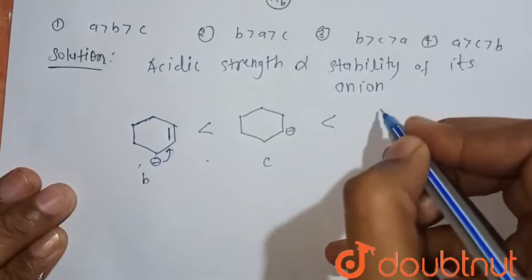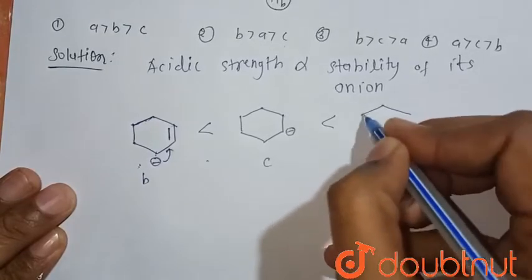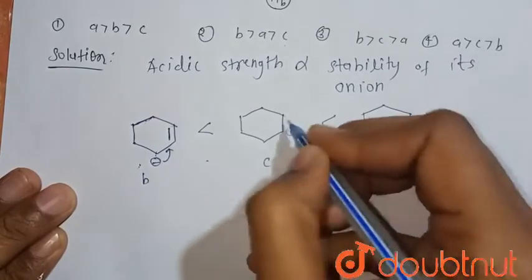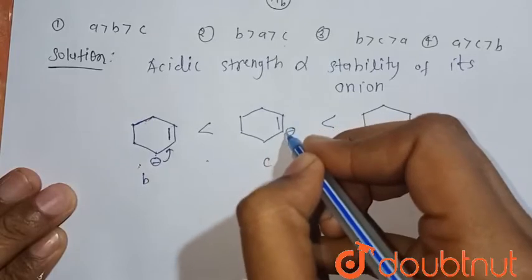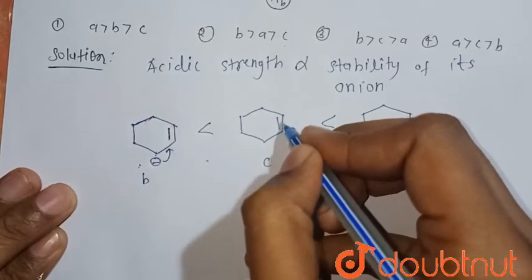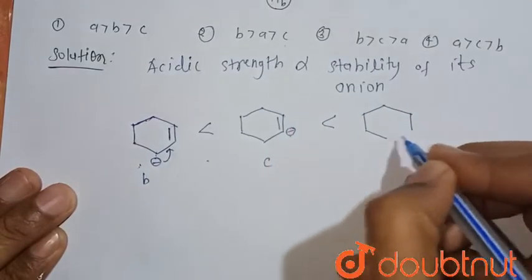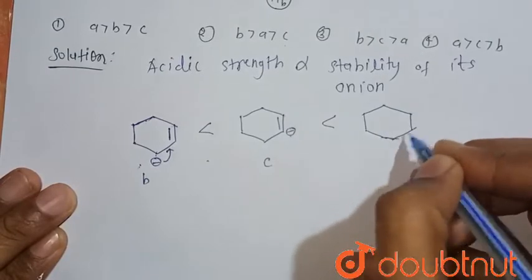Then after removal of the C hydrogen, this is their increasing stability order. Then after removal, because here this double bond withdraws this electron energy toward its side so it becomes stable, but here no double bond is present.